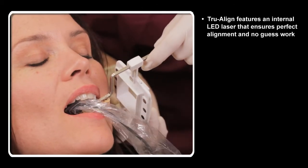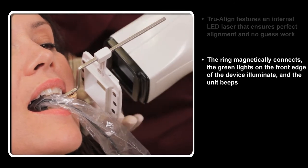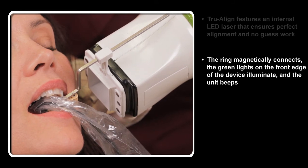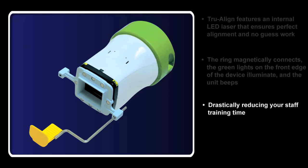When the laser and ring reflector are exactly aligned, the ring magnetically connects, the green lights on the front edge of the device illuminate and the unit beeps, indicating a perfect image every time. Even a novice can take perfect images in just minutes, drastically reducing your staff training time.